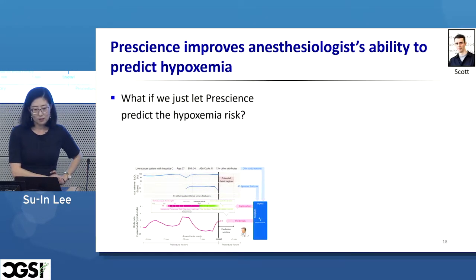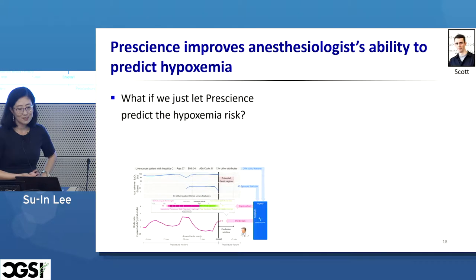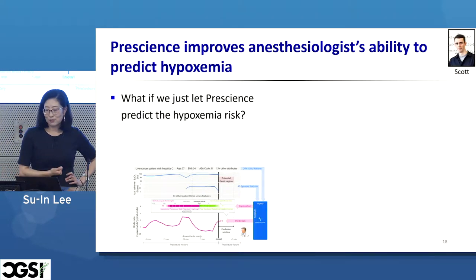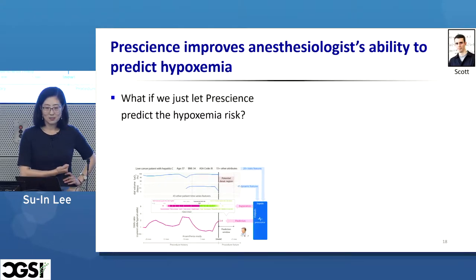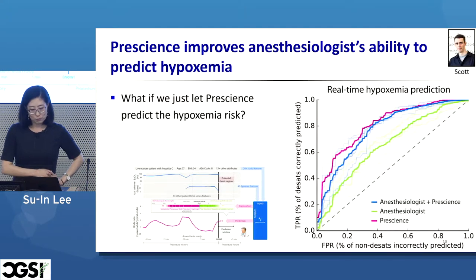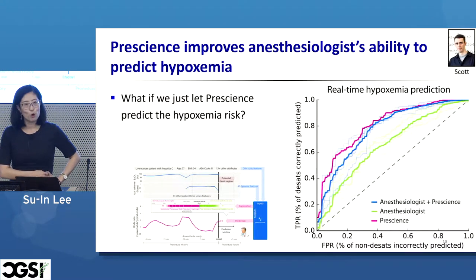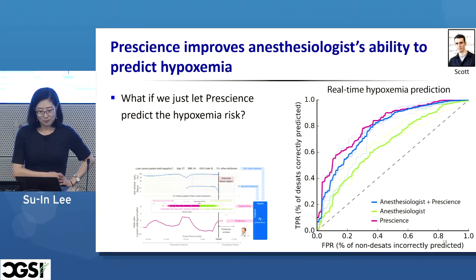The natural question is what happens if we just let the machine learning predict hypoxemia — an AI doctor. Interestingly, the prediction performance of anesthesiologists with Prescience was slightly lower than direct predictions from Prescience alone.